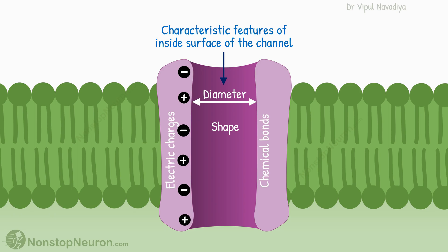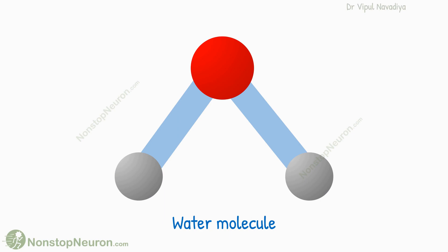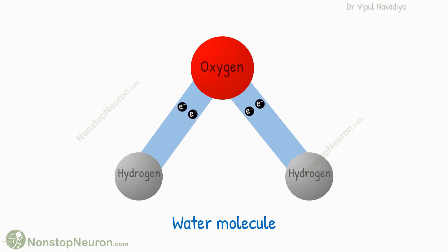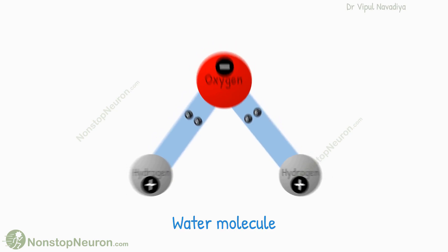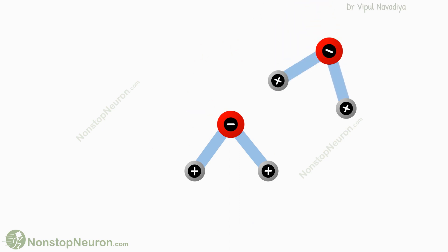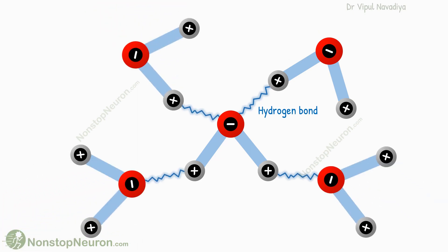Before we see an example of any channel, you need to understand how a dissolved ion interacts with water molecules. This is a water molecule — it has one oxygen and two hydrogen atoms. The electron pair between the oxygen and hydrogen is pulled more strongly by oxygen, so it lies closer to oxygen than hydrogen. This gives the oxygen a partial negative charge and the hydrogen atoms a partial positive charge. Because of this, an oxygen atom of one water molecule and a hydrogen atom of another are attracted to each other — this bond is called a hydrogen bond. Multiple such bonds can be seen around one water molecule.